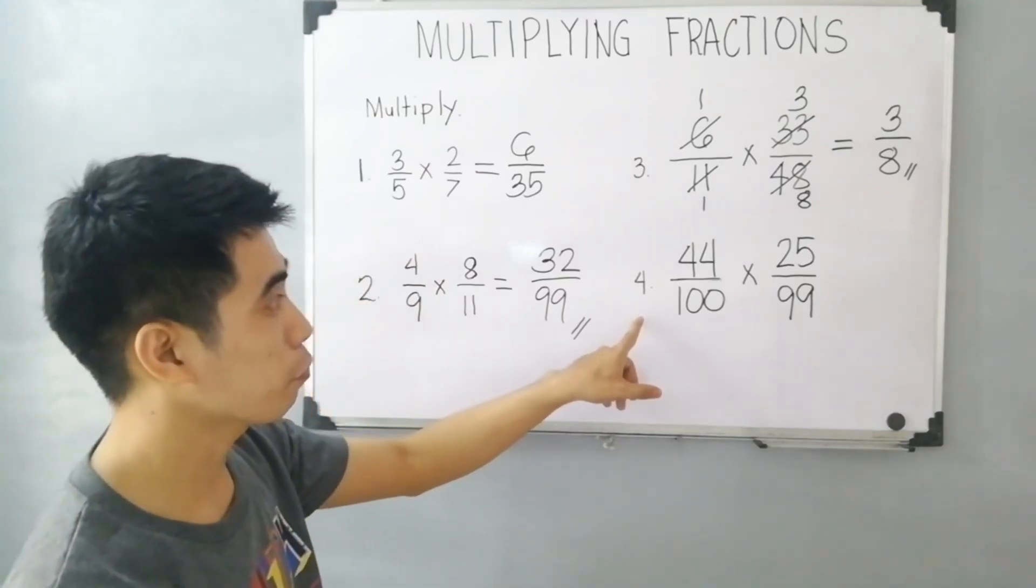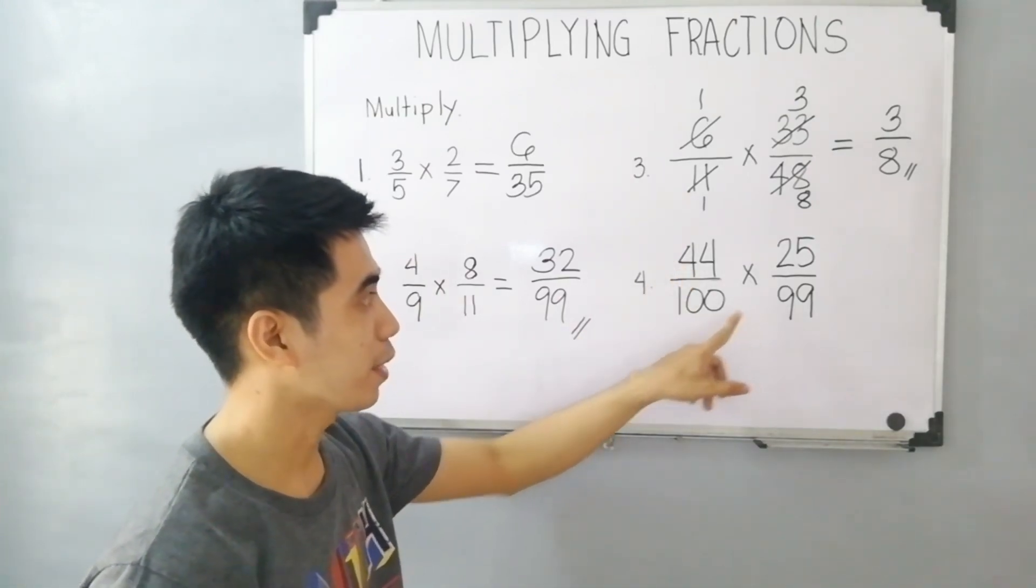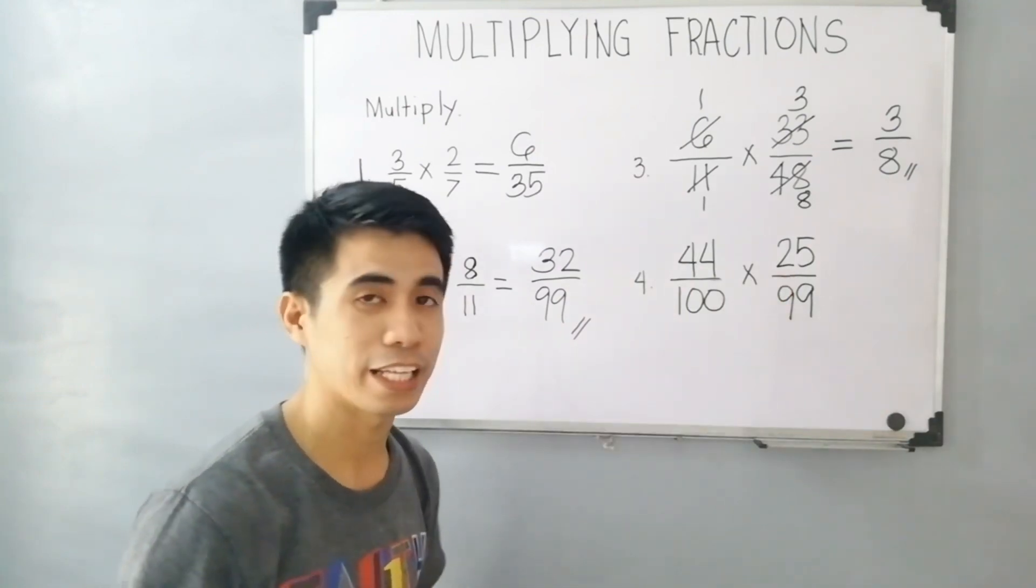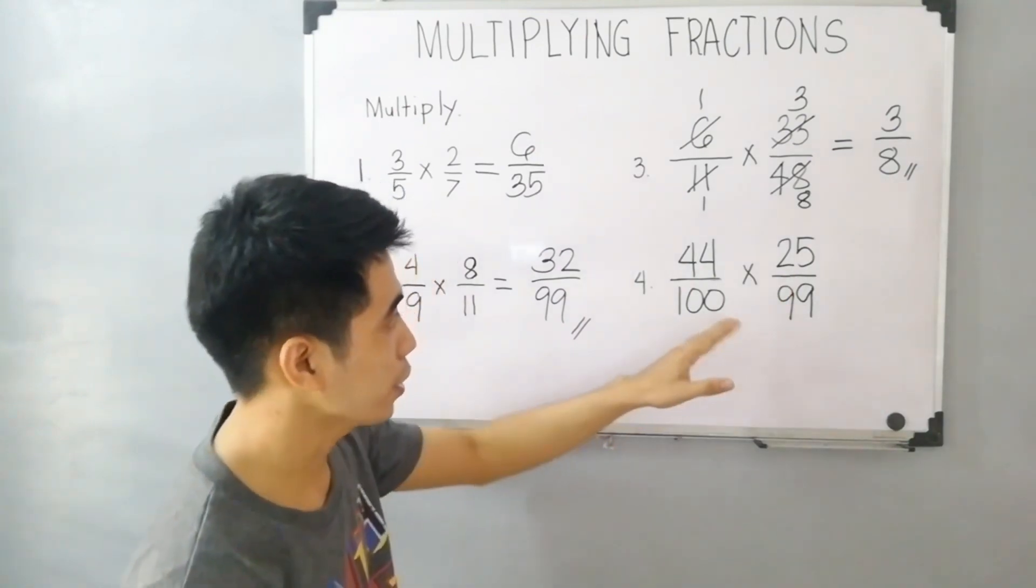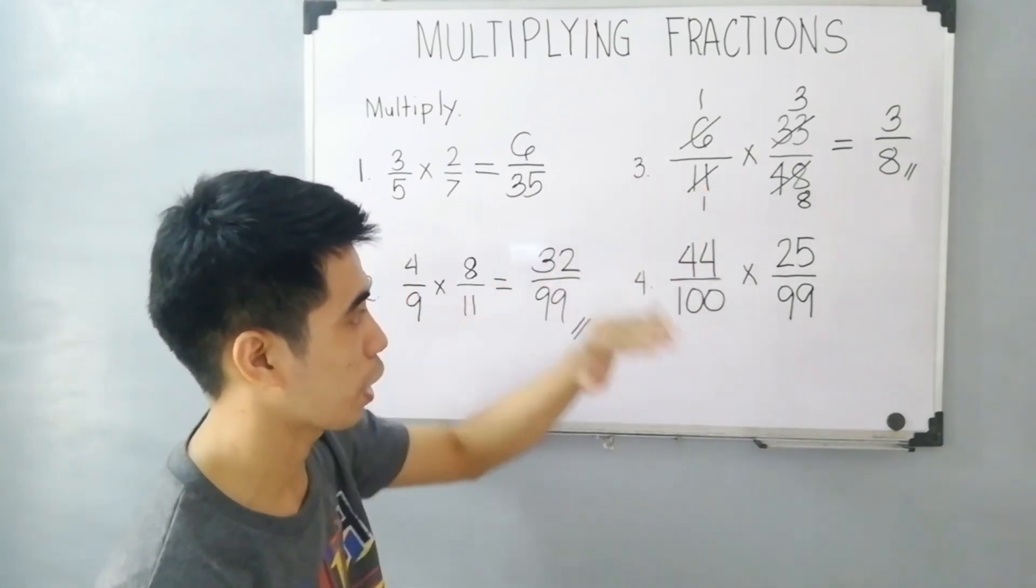For item number 4, 44 over 100 times 25 over 99. These fractions have bigger numbers in numerator and denominator.